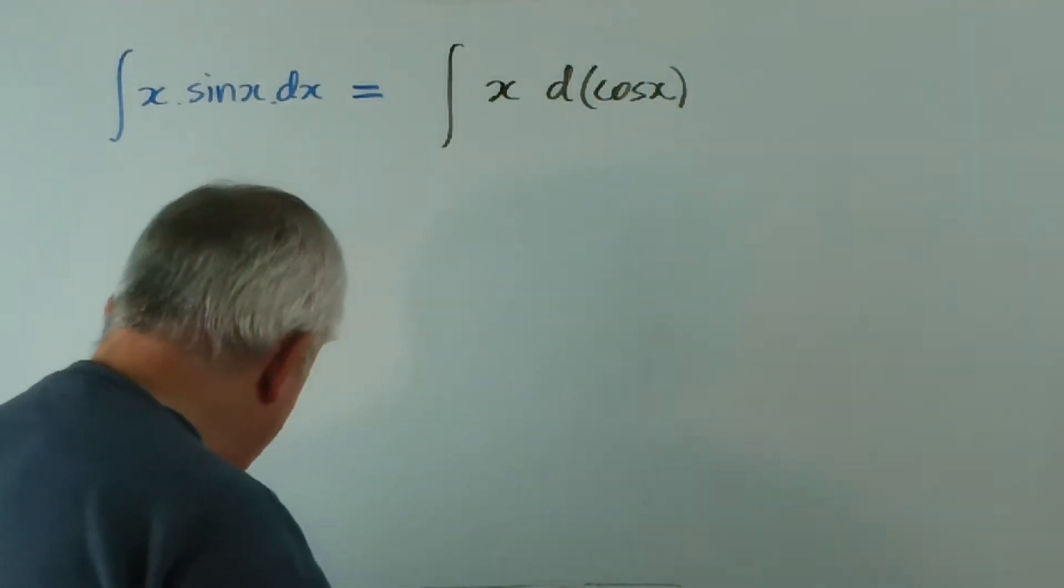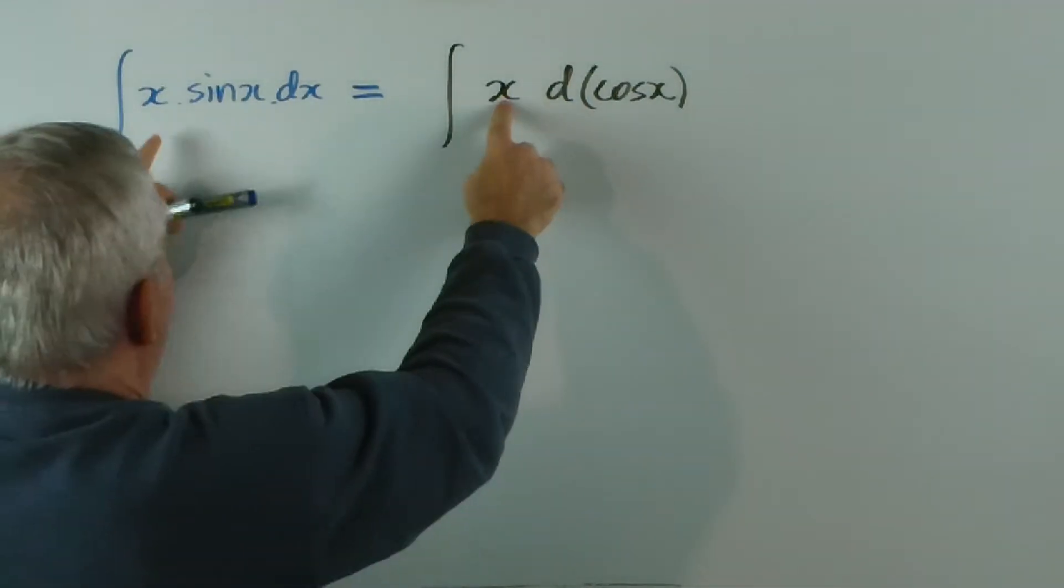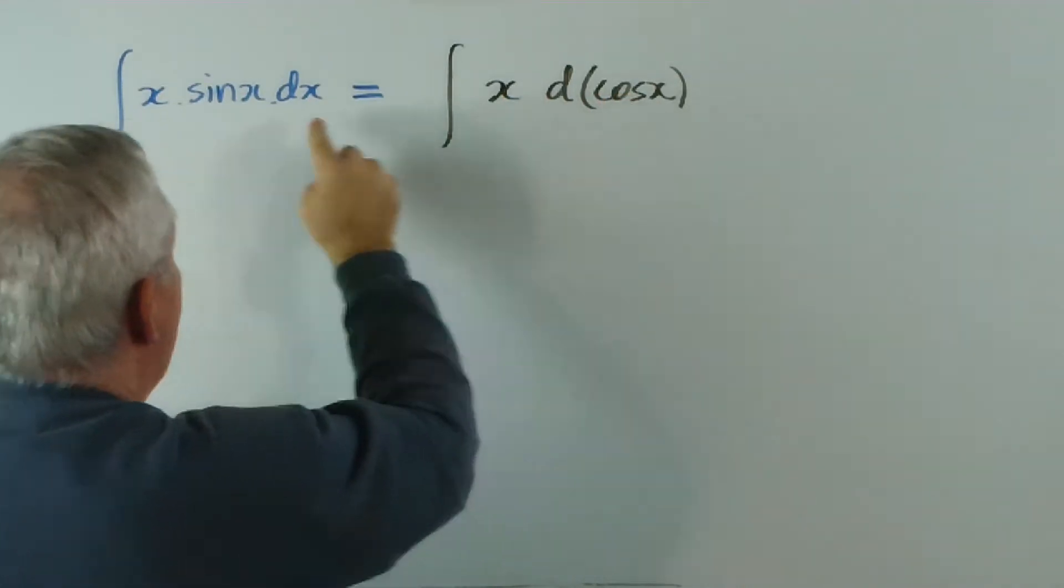Now, I hope you notice we have an adjustment to make. The x remains, but the integral... the derivative of cos is negative sin.